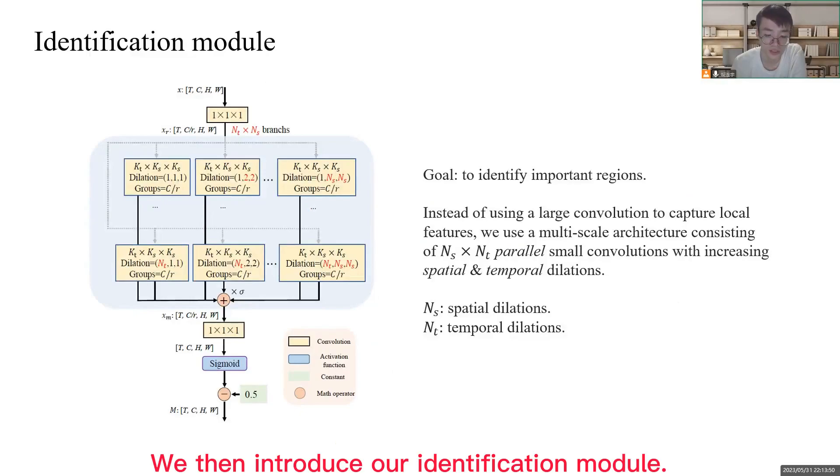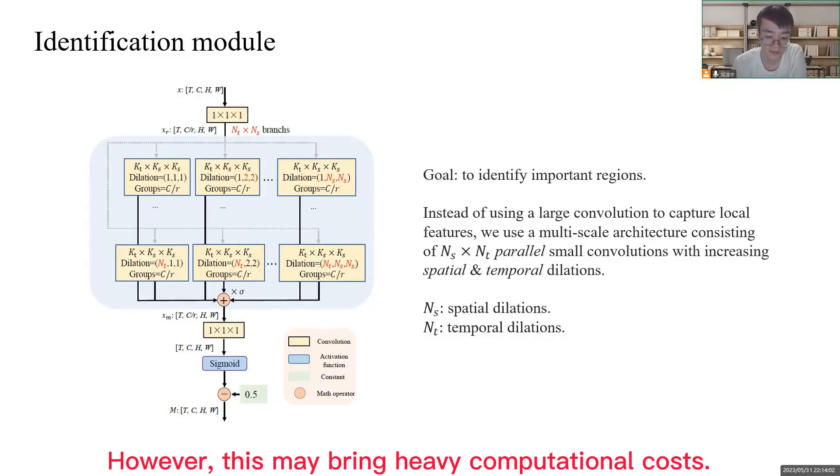We then introduce our identification model. To identify which region is important in cross-frame trajectories, we usually use a large convolution to capture local features. However, this may bring heavy computational costs.